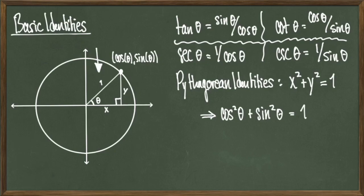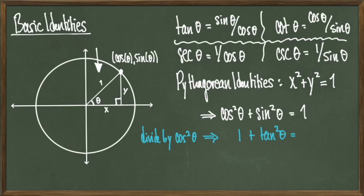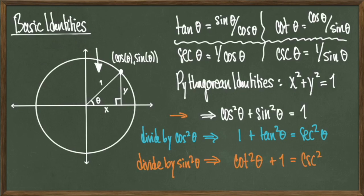This is a result that's always true. To elaborate, take this equation and divide both sides by cosine squared of theta. This reveals the next identity: 1 plus tangent squared of theta equals secant squared of theta. In a similar fashion, divide the first equation by sine squared of theta to get cotangent squared of theta plus 1 equals cosecant squared of theta. So these three equations are known as the Pythagorean identities.